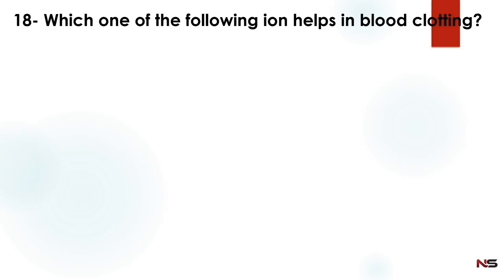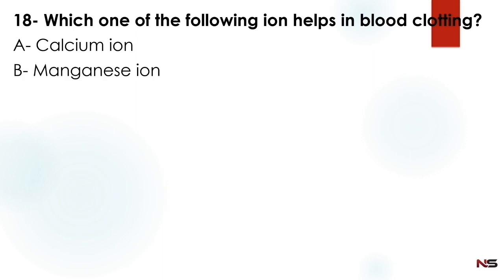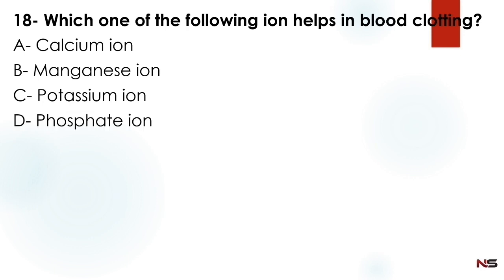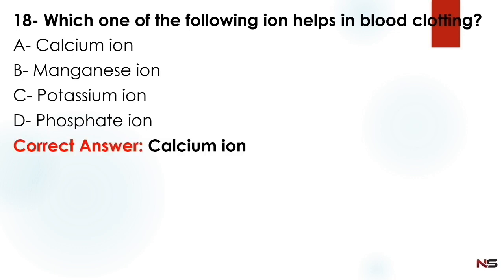Next question: Which one of the following ions helps in blood clotting? Option A: calcium ion. Option B: manganese ion. Option C: potassium ion. Option D: phosphate ion. The correct answer is Option A — calcium ion.